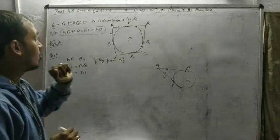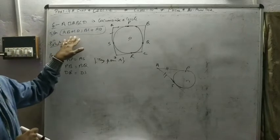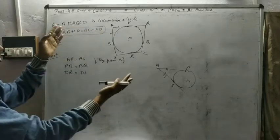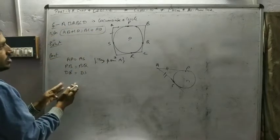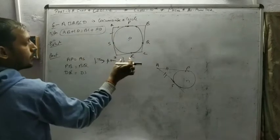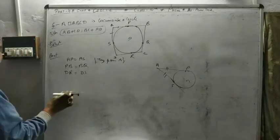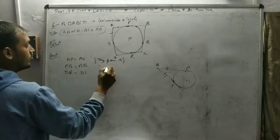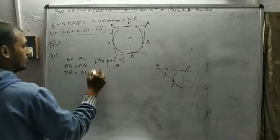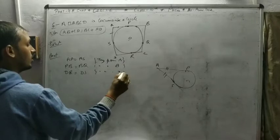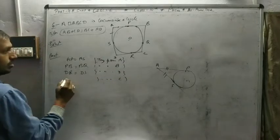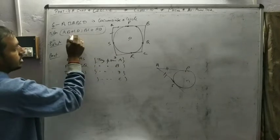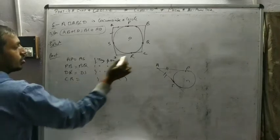Why do we take DR first? Because we always look at the proving part. AB and CD are on the left side; BC and AD are on the right side. For the ABCD part on the left side: AB contains AP and PB; CD contains DR and RC. So these parts go on the left side, and the others go on the right side. CR equals CQ — tangent from C — and CR is a part of CD on the left side, equal to CQ.